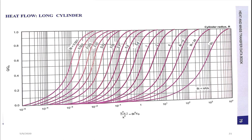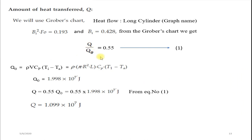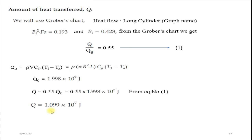With q/q₀ = 0.55, calculate q₀ = ρ × πR²L × Cp × (Ti − Ta) = 1.998×10⁷ J per unit length. Therefore q = 0.55 × q₀ = 1.099×10⁷ J. That is the heat transferred from the cylindrical shaft during 25 minutes.